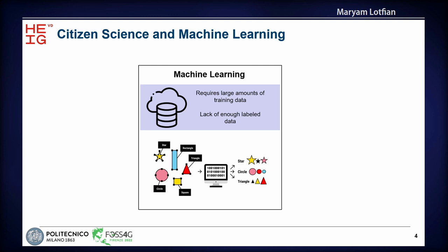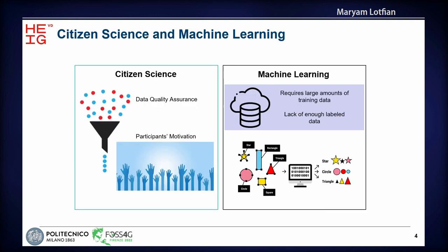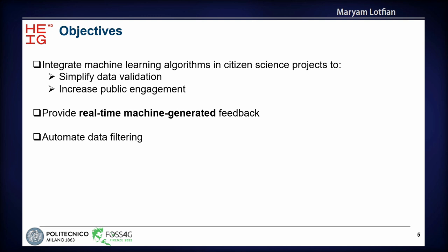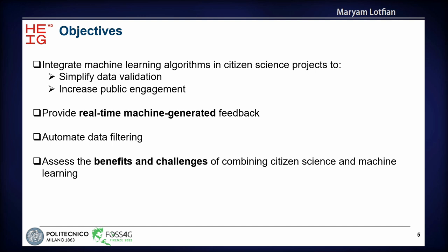Can machine learning algorithms help in addressing some of the challenges in citizen science projects? In particular, the two main challenges of motivating the public to contribute — public engagement — and also validating the data collected from the public. The objective of this research is to see how the integration of machine learning algorithms in citizen science projects can simplify data validation, increase public engagement, and provide real-time feedback to participants to increase their motivation. By automating data validation, we aim at improving data quality and evaluating the benefits and challenges that might arise from this integration.